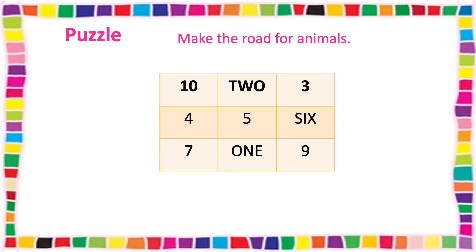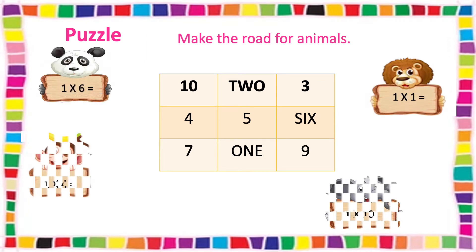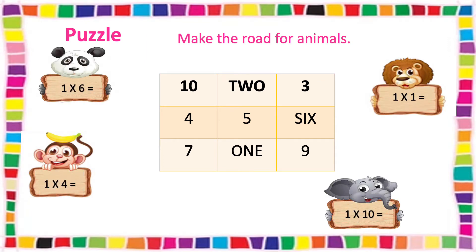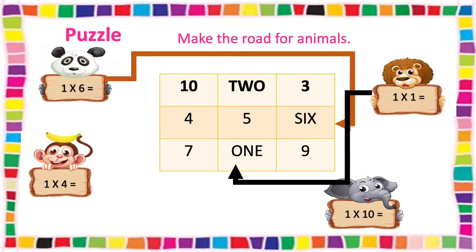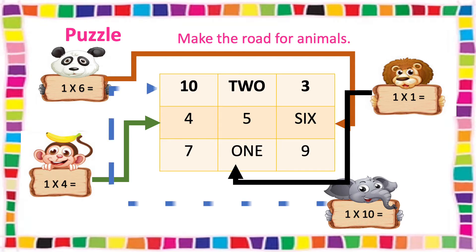The puzzle answers: the lion — 1 × 1 = 1. Next is panda — 1 × 6 = 6. Next is monkey — 1 × 4 = 4. Next is elephant — 1 × 10 = 10.